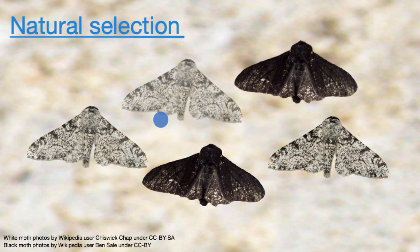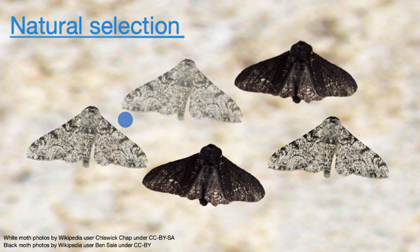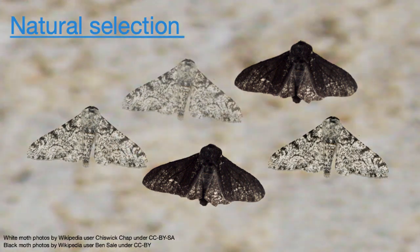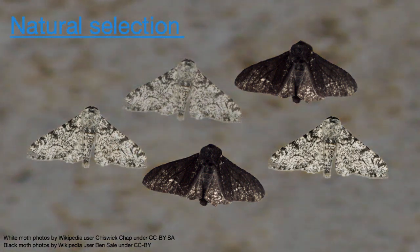Now, what's interesting is that between the mid-1800s and the late 1800s, you have the industrial revolution in London really hitting full gear. And so there was a lot of pollution in the air, and a lot of the surfaces that the moths might rest on, like trees or the wall of a building, became darker and darker.